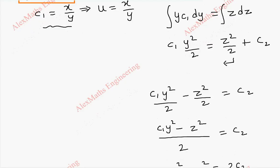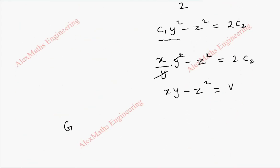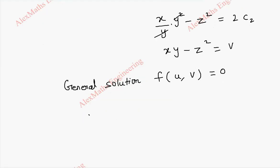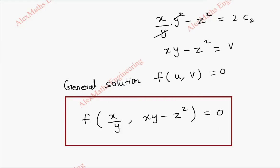Now, using this u and v, we are going to give the general solution. Our general solution is f of u, v equal to 0. And so, f of x by y comma xy minus z square equal to 0. So we got the general solution for the given partial differential equation by Lagrange's method.